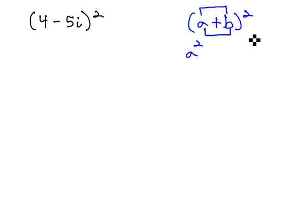And it's there twice. ab and ab is 2ab, and then finally we square the last term to get b squared.